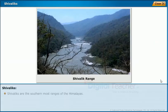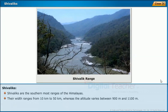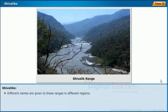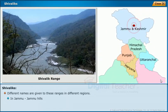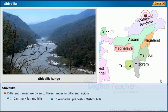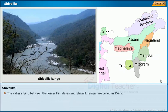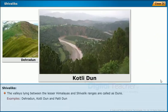Shivaliks are the southernmost ranges of the Himalayas. Their width ranges from 10 km to 50 km, whereas the altitude varies between 900 m and 1,100 m. Different names are given to these ranges in different regions: Jammu Hills in Jammu, Mishmi Hills in Arunachal Pradesh, and Sachar in Assam. The valleys lying between the Lesser Himalayas and Shivalik ranges are called Dhans. Examples include Dehradun, Kotli Dhan, and Patli Dhan.